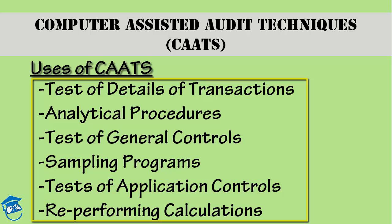Lastly, re-performing calculations. If something has already been completed manually and you need to reassess whether you performed that calculation in the most appropriate way — and whether the same is accurate and complete — Computer Assisted Audit Techniques will help you in re-performing calculations as well. So these are some of the marvelous uses of CATs: test of detail of transactions, analytical procedures, test of general controls, sampling programs, test of application controls, and re-performing calculations. This list is not exhaustive; there are many more uses.